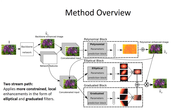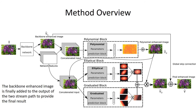In a two-stream path, we estimate parameters of the elliptical and graduated filters, which are applied to the polynomial-enhanced image. A global skip connection adds the backbone-enhanced image to produce the final output.